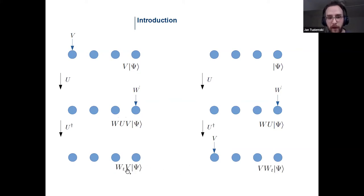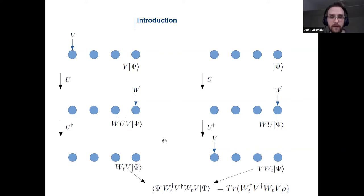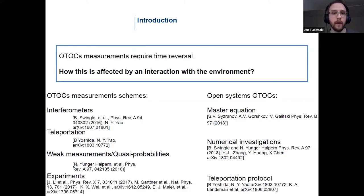Those two states differ only because the order in which the operators are applied is different. I can ask how different those two states are by computing their scalar product. When written using the trace, you basically recover the expression for OTOCs. So you can think of OTOCs as functions providing information about the influence of changing the order of application of these two operators, with forward and backward time evolution of the quantum many-body system involved in between.